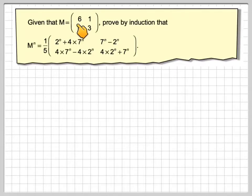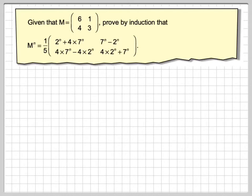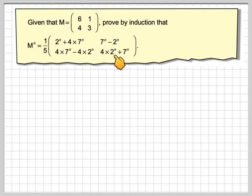Given that M is the matrix [[6,1],[4,3]], prove by induction that M to the n is 1 fifth of the matrix: [2n + 4×7n, 7n − 2n; 4×7n − 4×2n, 4×2n + 7n].